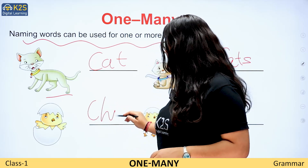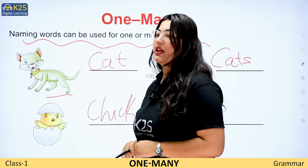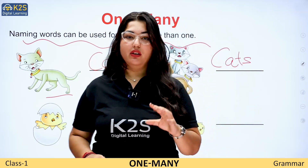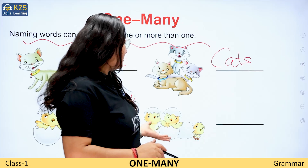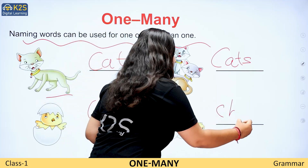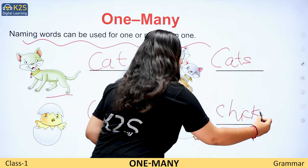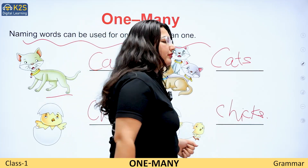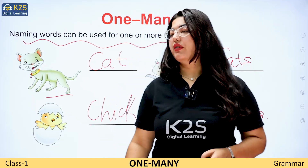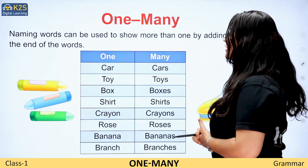Chick. One chick. But here, there are many chicks. So you are going to write chicks. Moving to the next part.